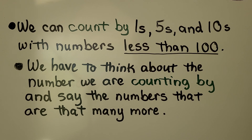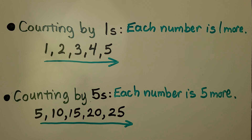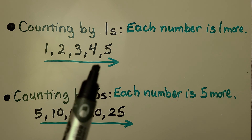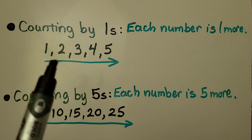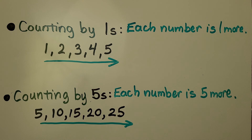We have to think about the number we are counting by and say the numbers that are that many more. Counting by 1s, each number is one more. We count 1, 2, 3, 4, 5. Each number is one more than the number before it.